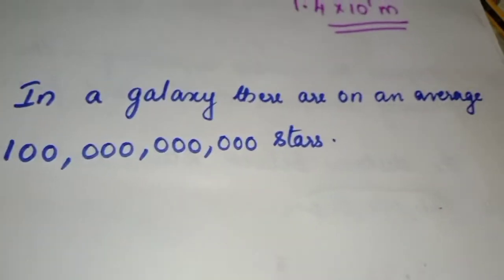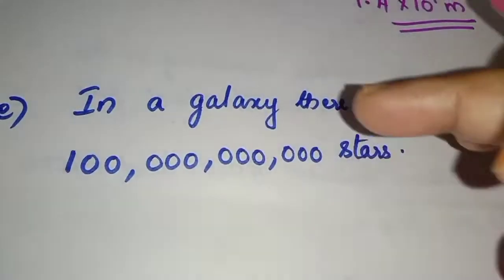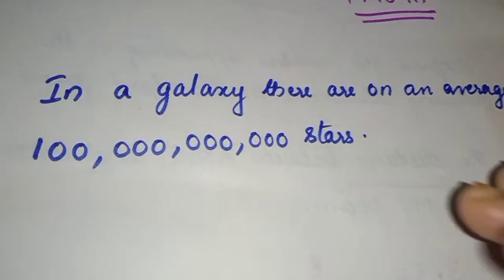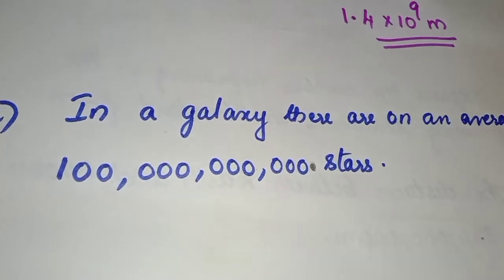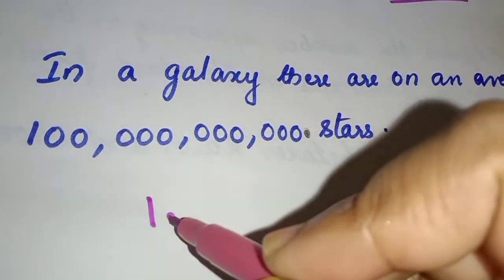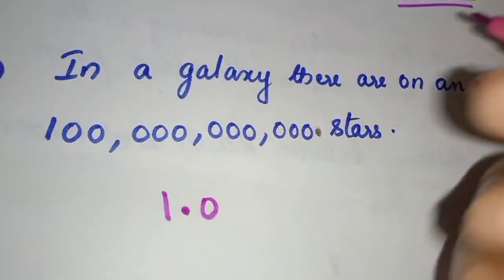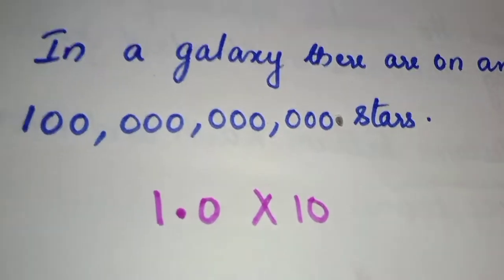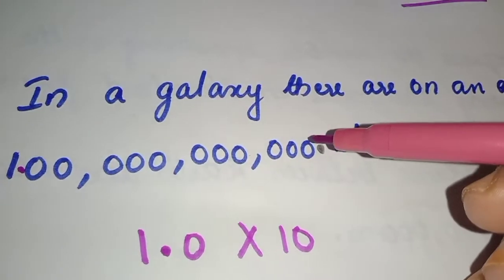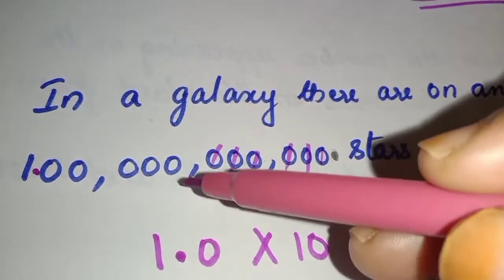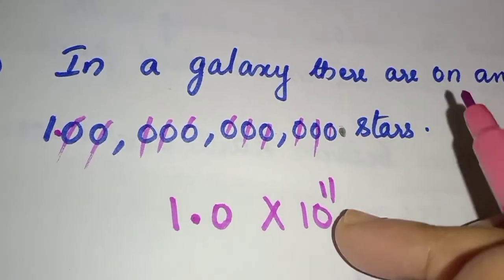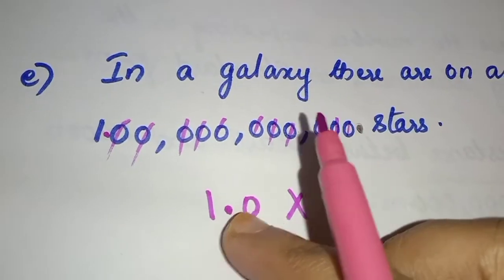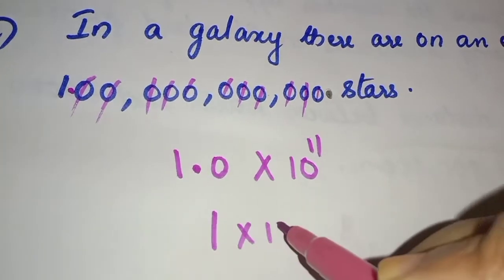Next question: In a galaxy, there are on an average 100,000,000,000 stars. We use the standard formula. We place the decimal after the first number and count how many places we shift: 1, 2, 3, 4, 5, 6, 7, 8, 9, 10, 11. So the answer is 1.0 into 10 rise to 11.